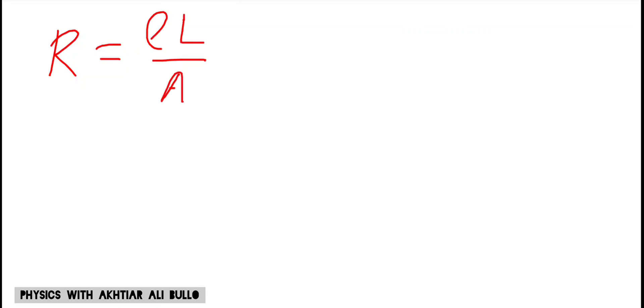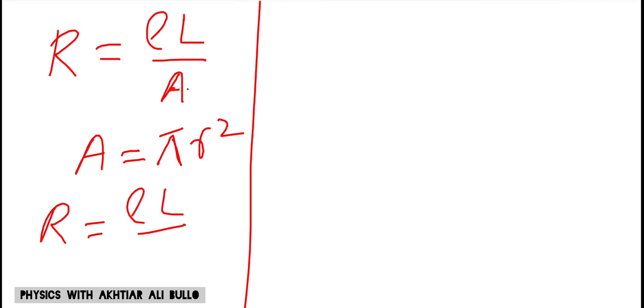To calculate the resistance we will use the formula R = ρL/A, where ρ is the resistivity, L is the length of the wire, and A is the area of cross-section. The area of cross-section is equal to πr².